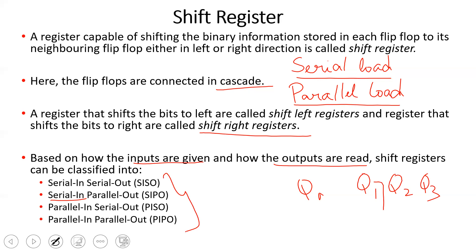Another classification is the bidirectional shift register. In a bidirectional shift register, data can be shifted either left or right. Mode 1 is left-to-right shift, and Mode 2 is right-to-left shift. That is the bidirectional shift register, also called the universal shift register.